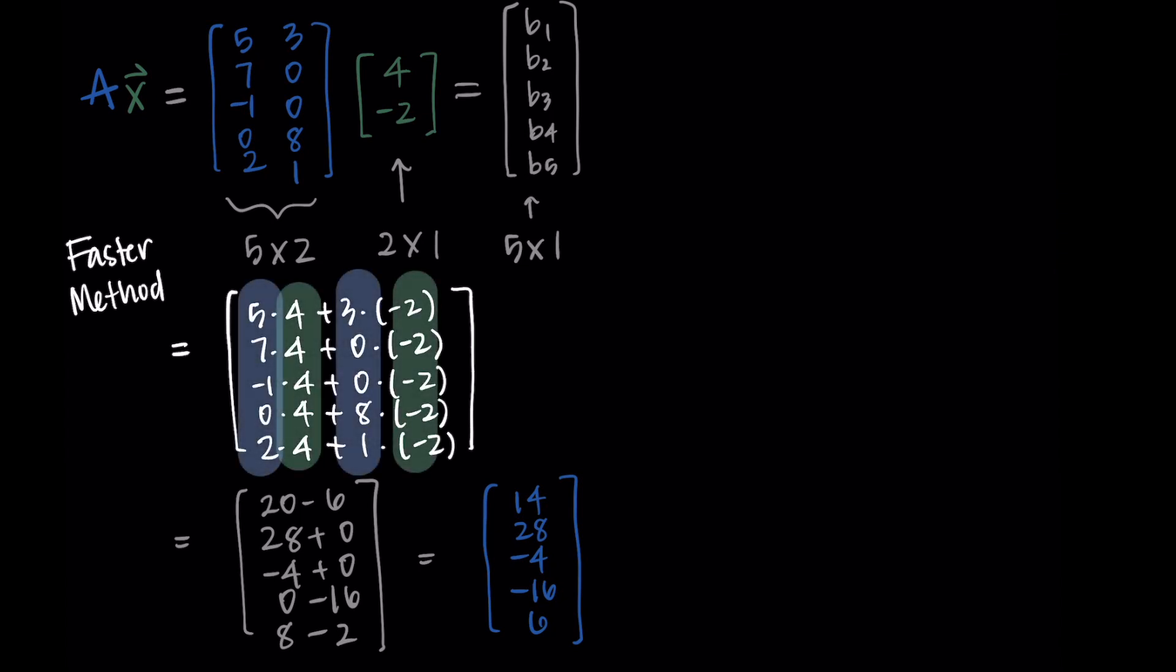So we have the columns of A and then they're being multiplied by that 4 and negative 2. So this saves us those middle steps of writing everything out and just gets us immediately to simplifying. So you can see here that these simplify and get us the same answer as we had from before. Okay let's try one more example.